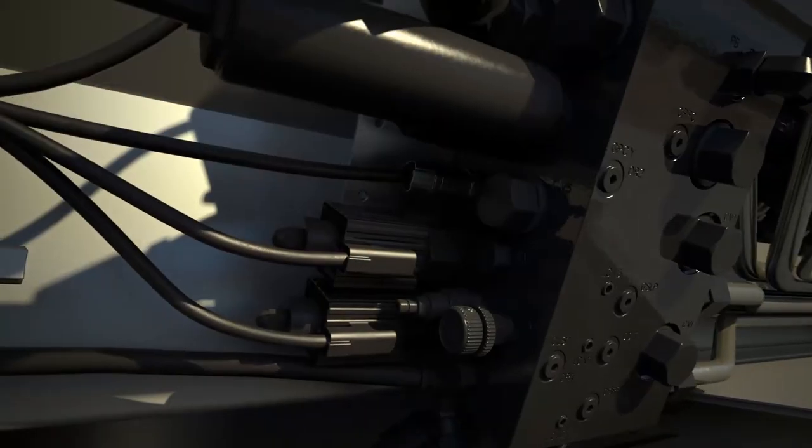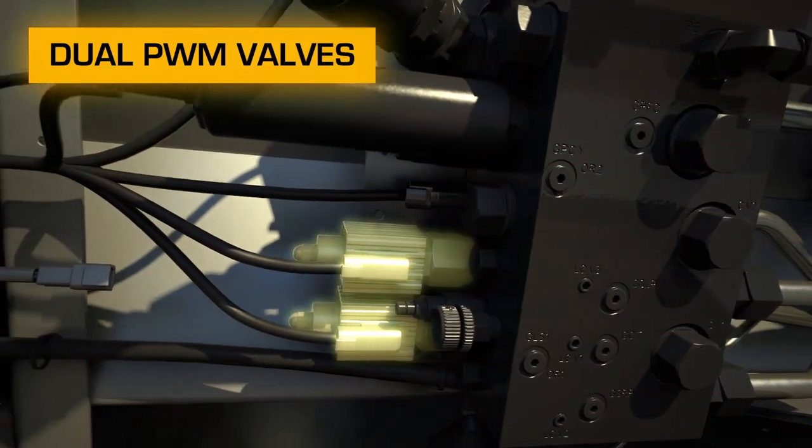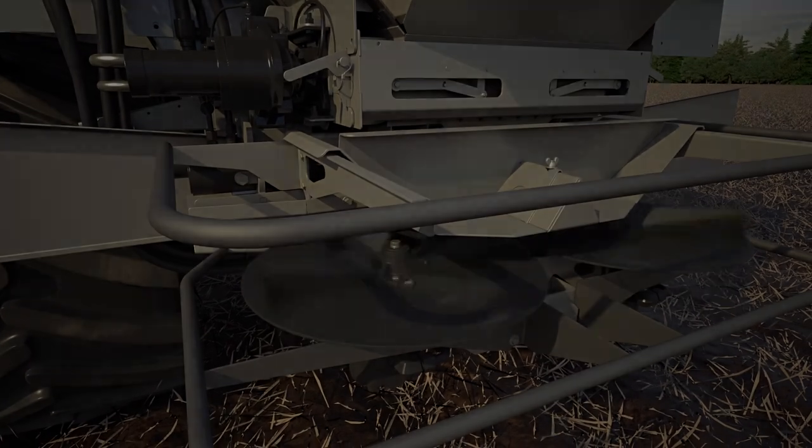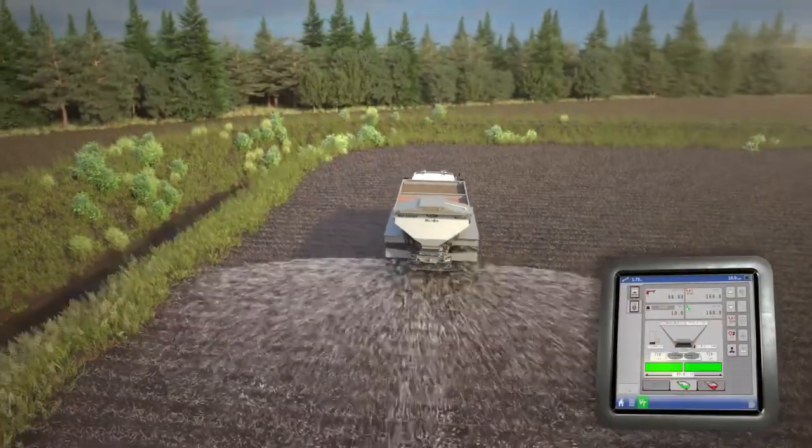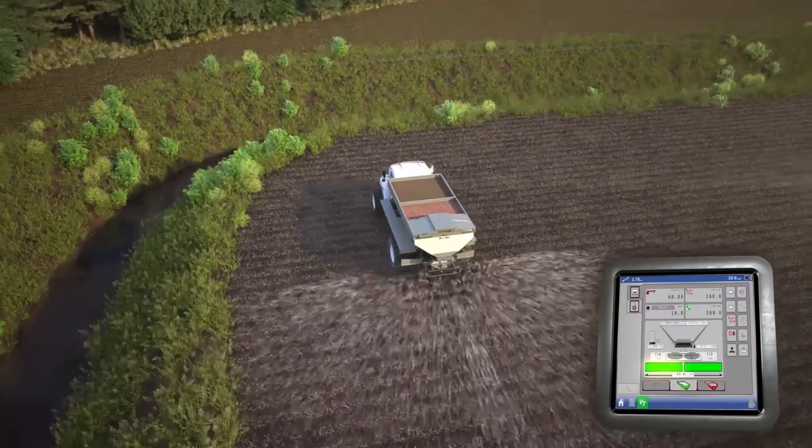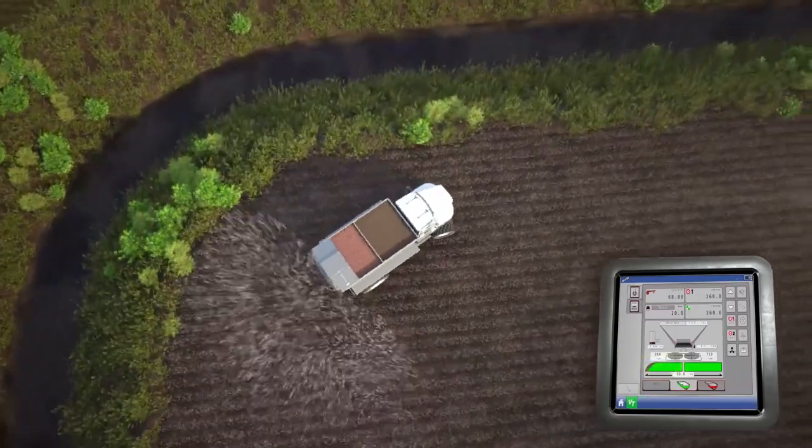Dual RPM sensors and PWM valves maintain a precise speed on each spinner independently, so you control the distance you need. Flip a switch and the NL5000 G5 applies materials along a boundary line, placing nutrients right where crops need them.